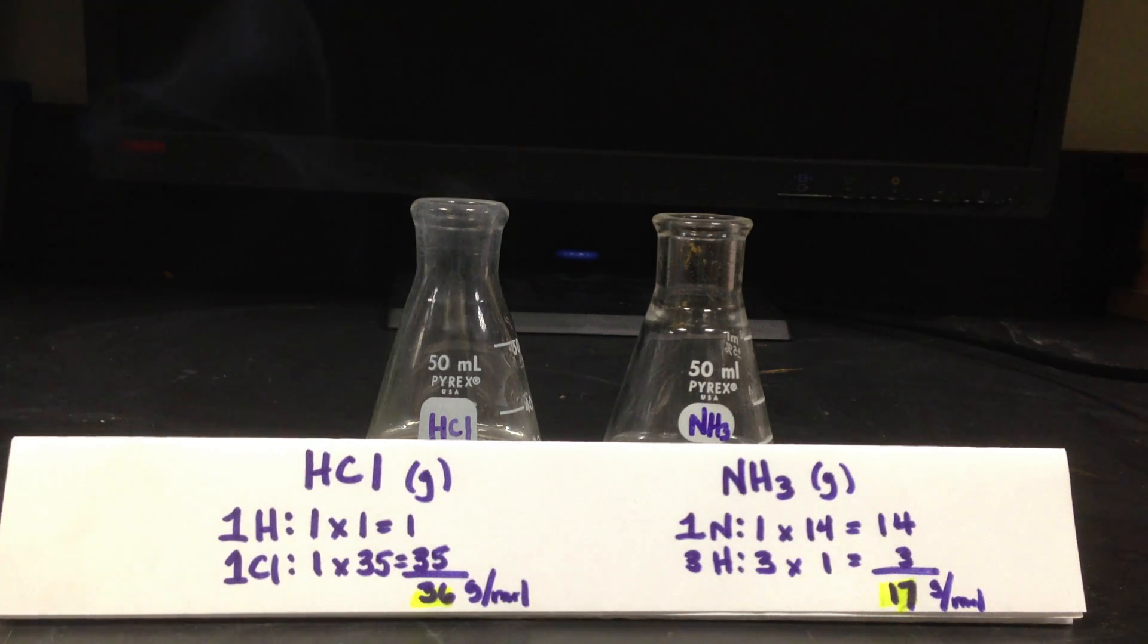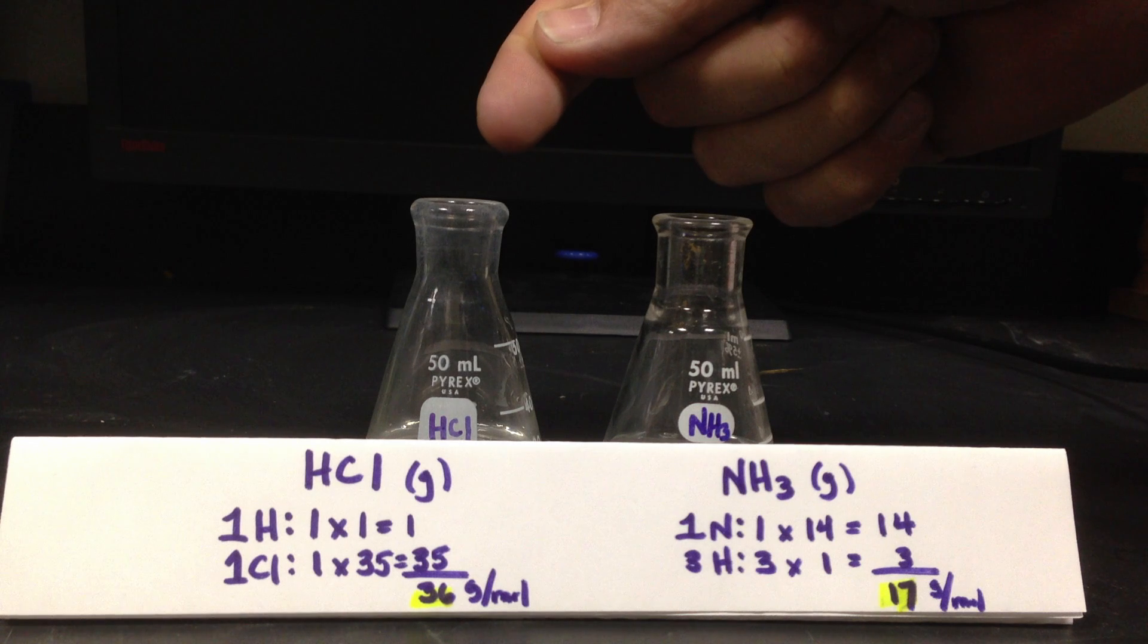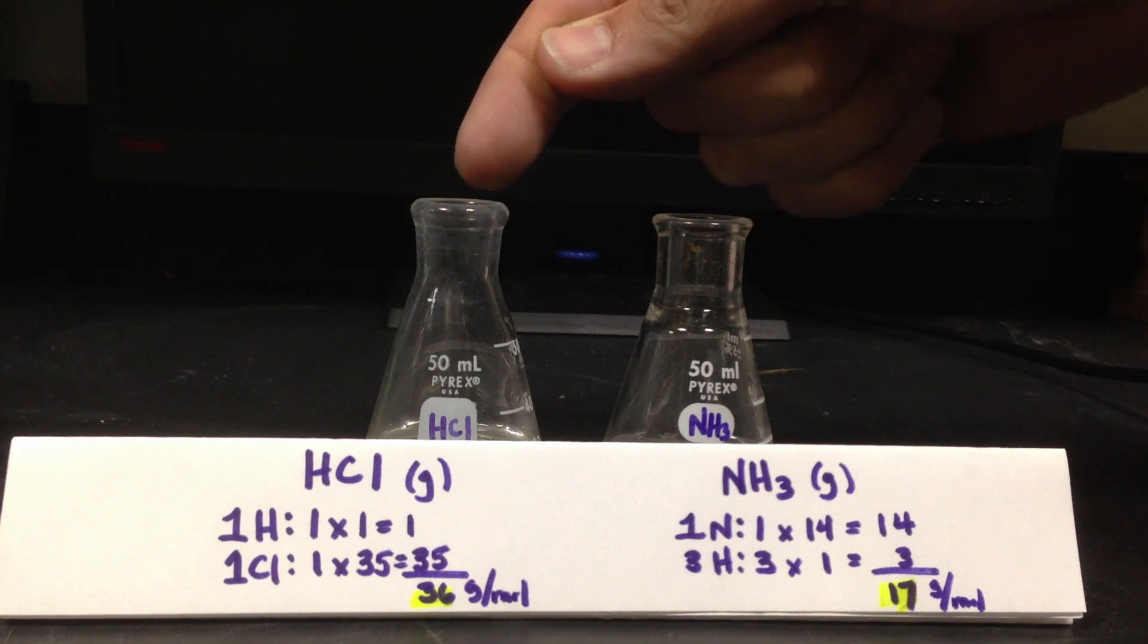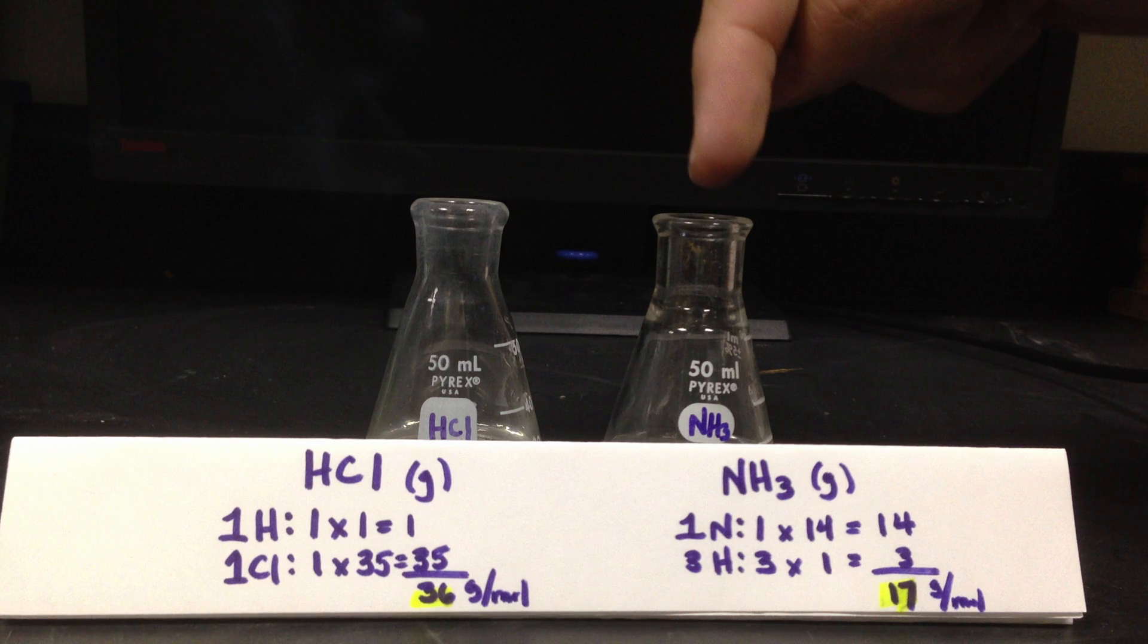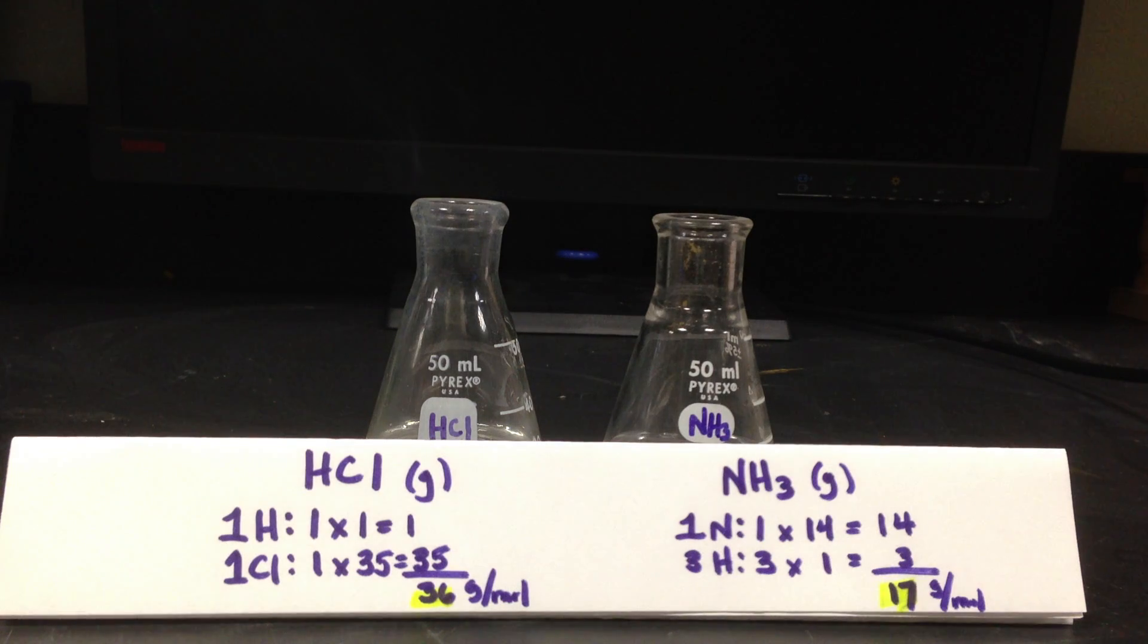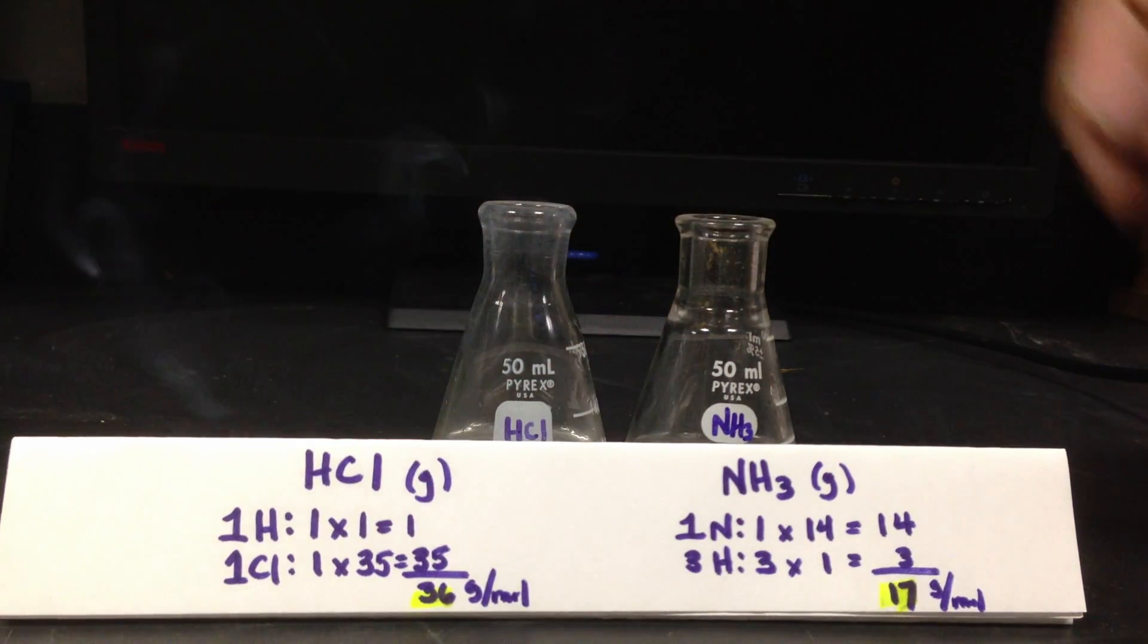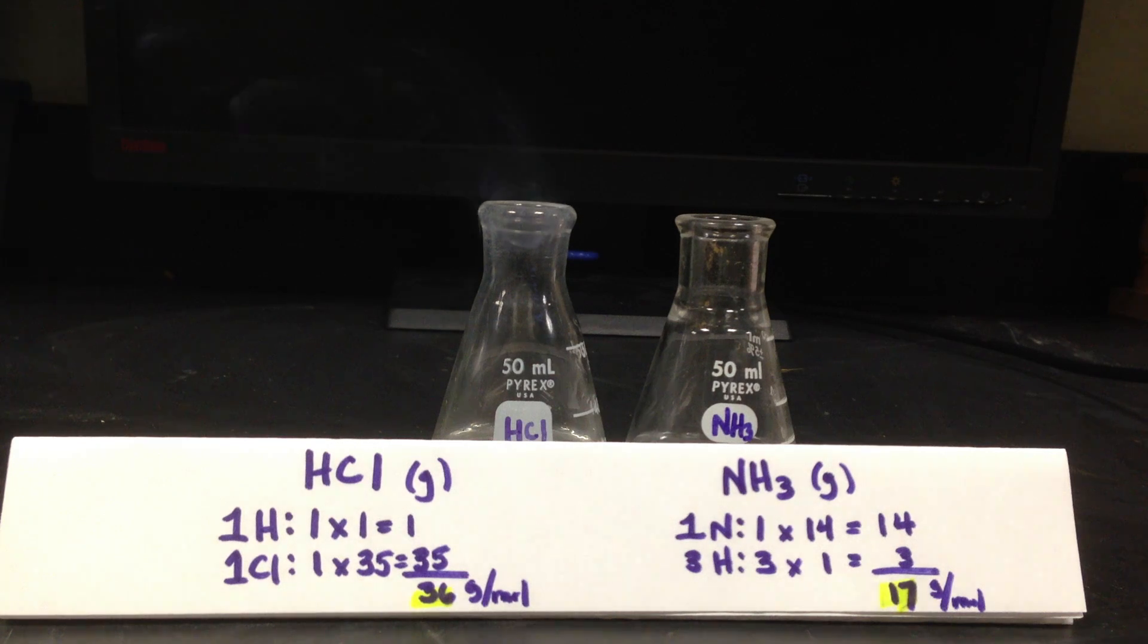So the lighter gas, ammonia, at the same temperature translates faster. We would say the lighter gas is diffusing faster and is meeting at this bottle. They're not meeting in the middle. The lighter gas is actually meeting at the slower gas's bottle to produce the white smoke. Push them closer together, and we'll see definite diffusion of ammonia to the hydrochloric acid.